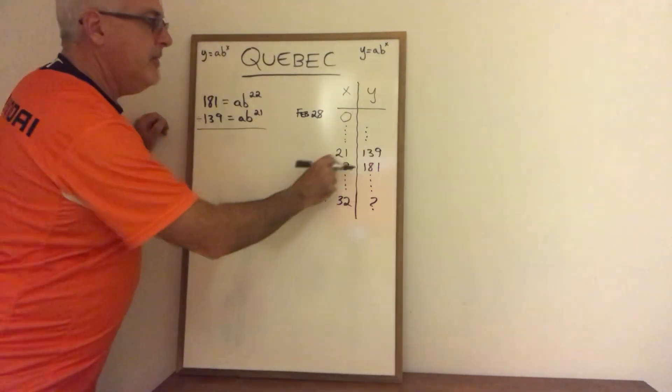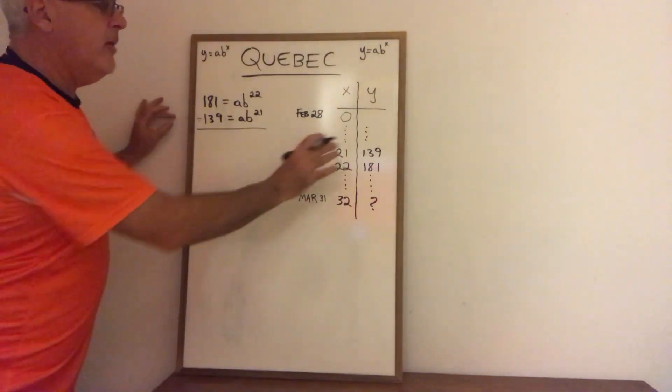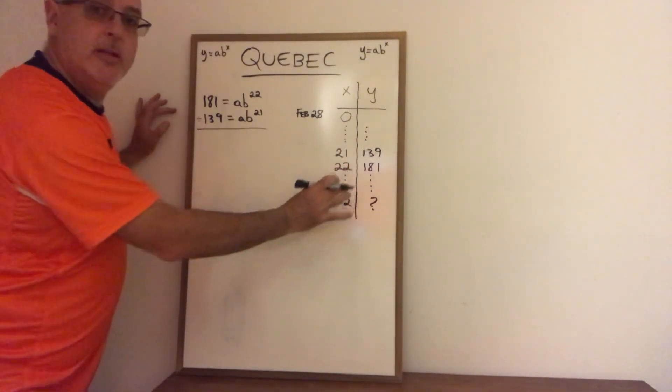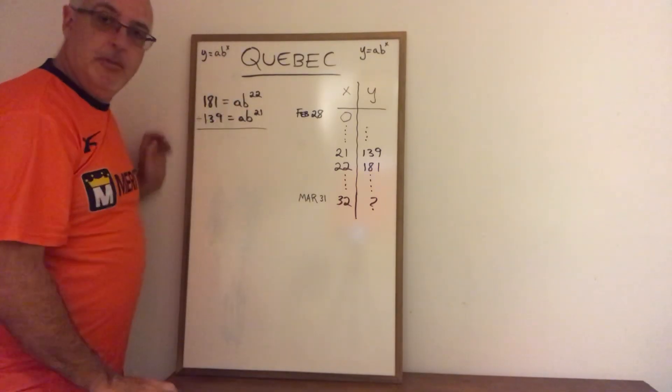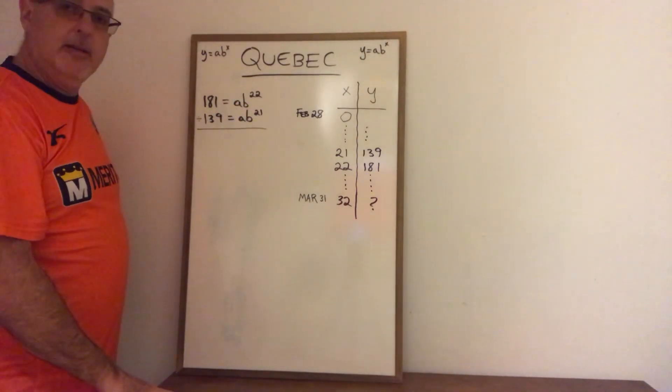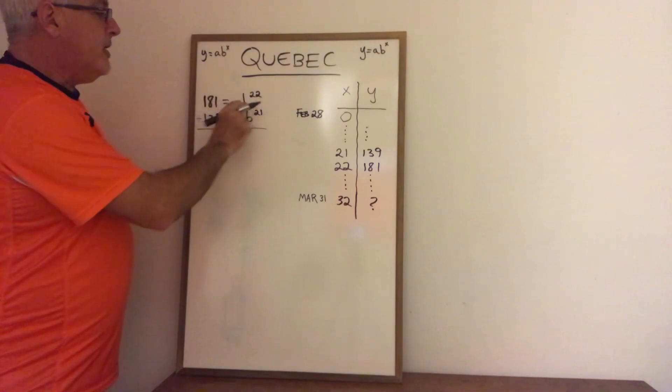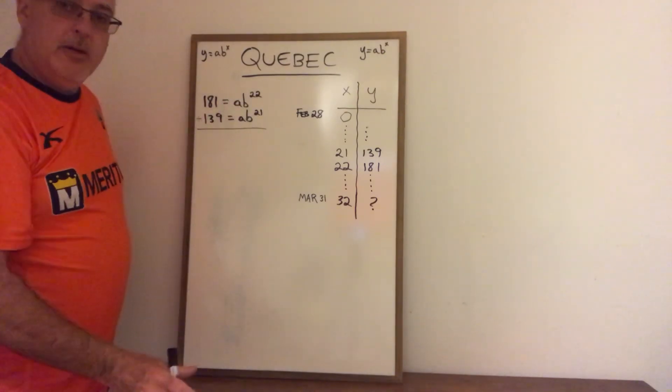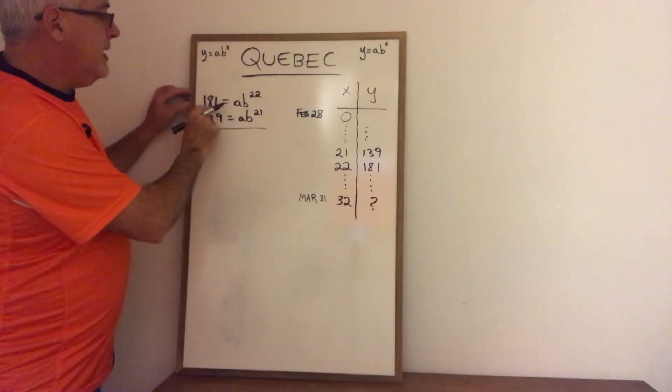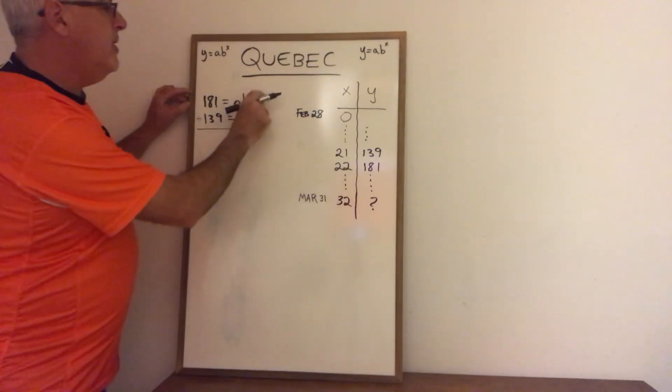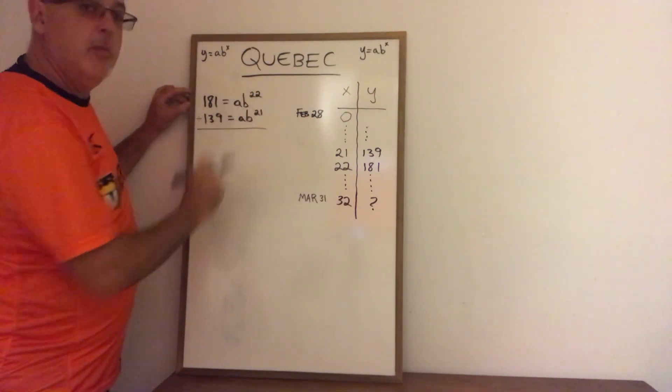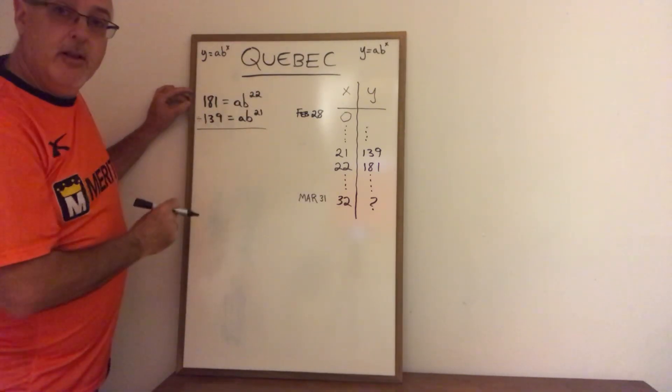So this gives us enough data that we can plug these two points into the form of an exponential equation y equals ab to the x in order to solve for b and a and find our equation. So I plug into the form with day 22 on top and then again with day 21 below and then I divide the equations.